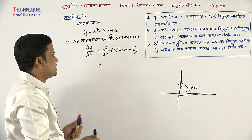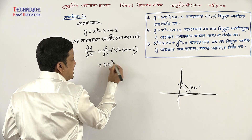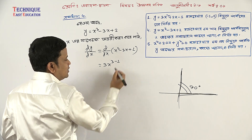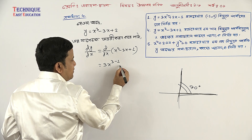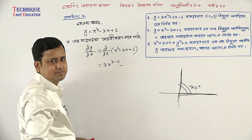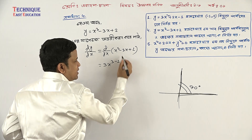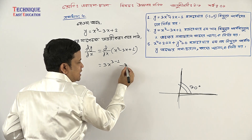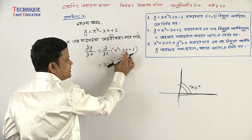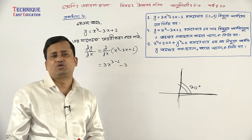So d/dx of x to the power n equals n·xⁿ⁻¹. d/dx of x to the power n is x to the power n minus 1. Minus d/dx of 3 — 3 is a constant — so 3 times d/dx of x. d/dx of x equals 1.